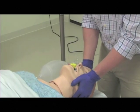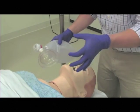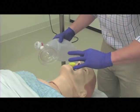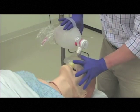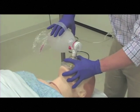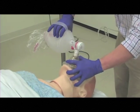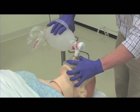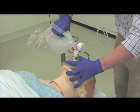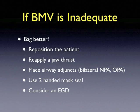For single-provider bag mask ventilation, use a C and E technique with your left hand: thumb and index finger form a C, other fingers form an E. The C places the mask over the face; the E pulls the jaw into the mask. Remember — pull the jaw into the mask. It's tempting to push down, but that may obstruct the airway and push the tongue back. Ventilate the patient with your right hand and look for adequate chest rise and fall. If this feels inadequate, the solution to poor bagging is better bagging.